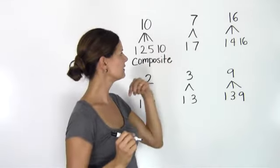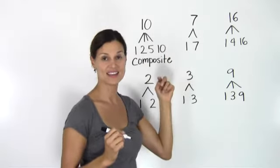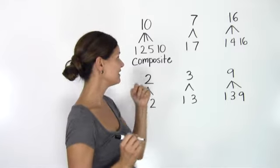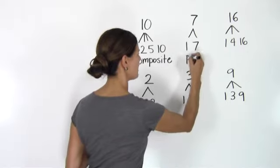7. I only have two numbers that can divide evenly into 7. This makes 7 a prime number.